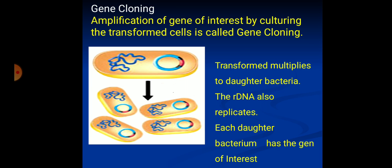The next step is gene cloning — the amplification of the gene of interest, producing many identical copies of genes. It is done by culturing the transformed cells in vitro. The transformed bacteria multiply at a very high rate — one bacterium can produce two bacteria every 20 minutes. In a sufficient culture medium with nutrients, the bacteria produce many daughter cells, each containing the rDNA with the gene of interest. This amplification of gene of interest is gene cloning.